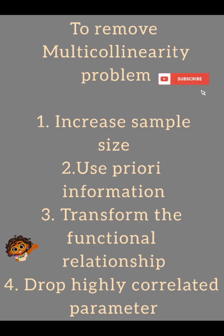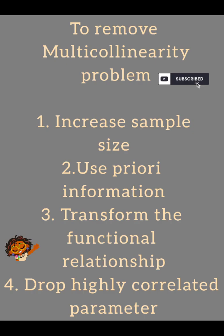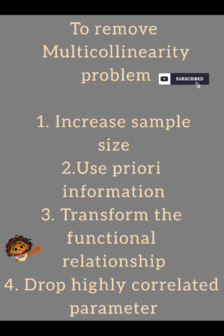There are some simple control measures to reduce or remove the multicollinearity problem. There are four controls: the first one is to increase sample size; the second one is to use prior information — for example, if you analyze the banking sector, go through some past information of that sector; the third one is to transform the functional relationship; and the last one is to drop the highly correlated parameter. In this manner we can simply remove the problem of multicollinearity in a regression model.